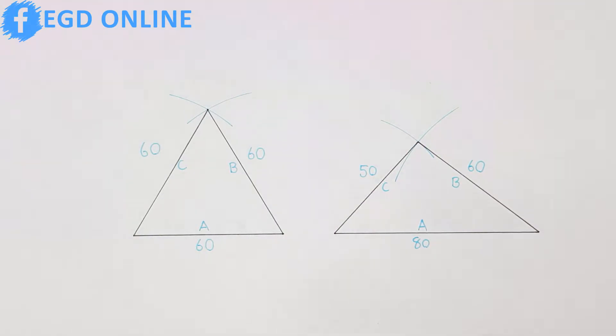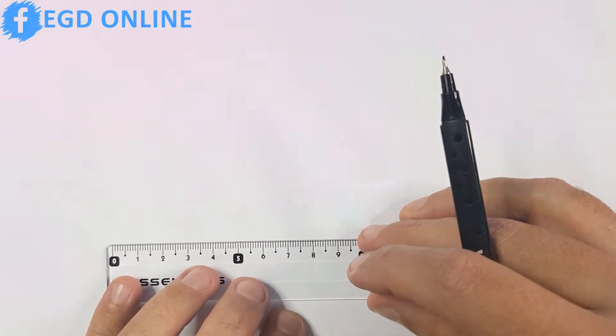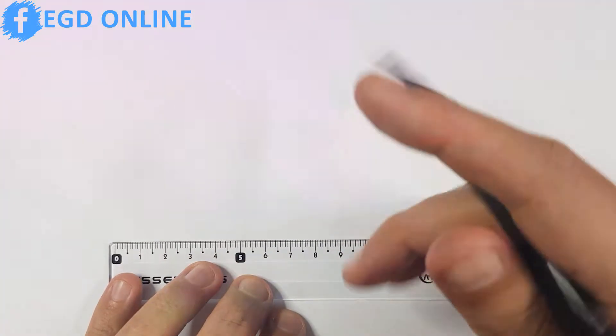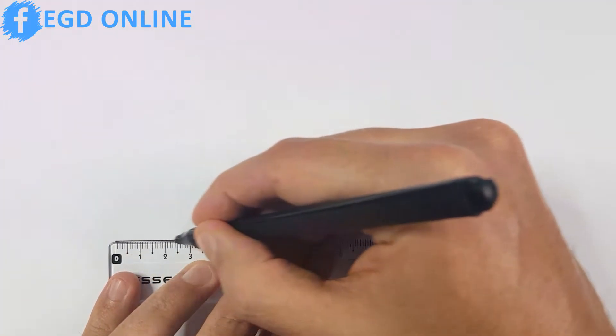Note that I'm using a blue pen to show my construction lines and for this method you will require your compass. For my first example I'll show you how to construct an equilateral triangle.